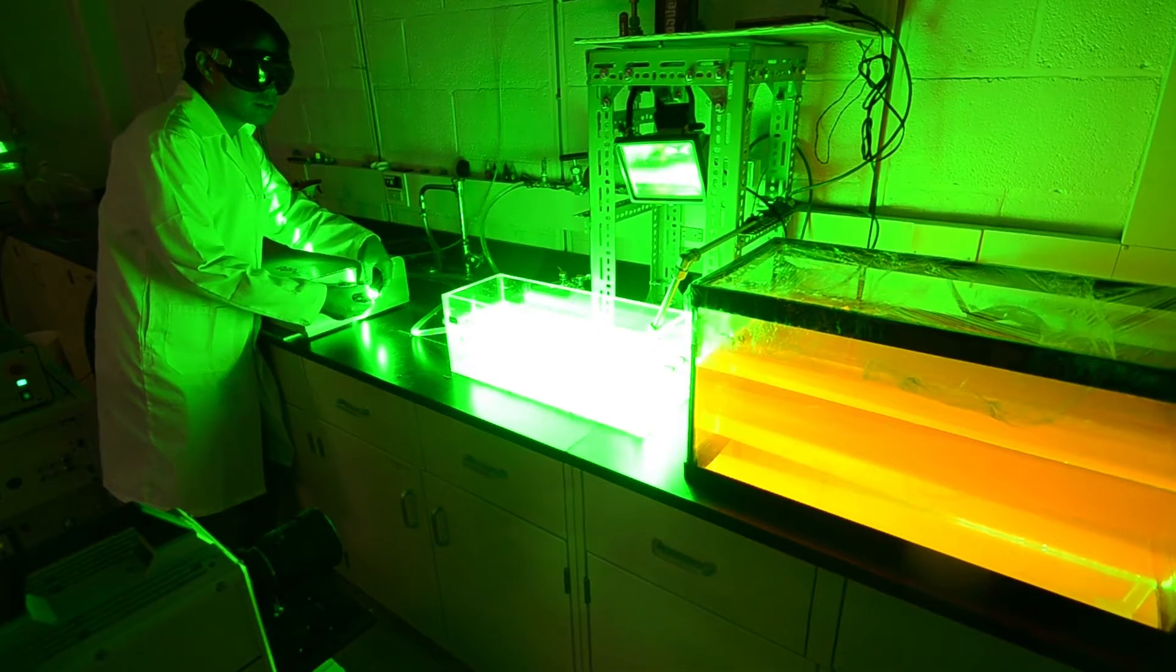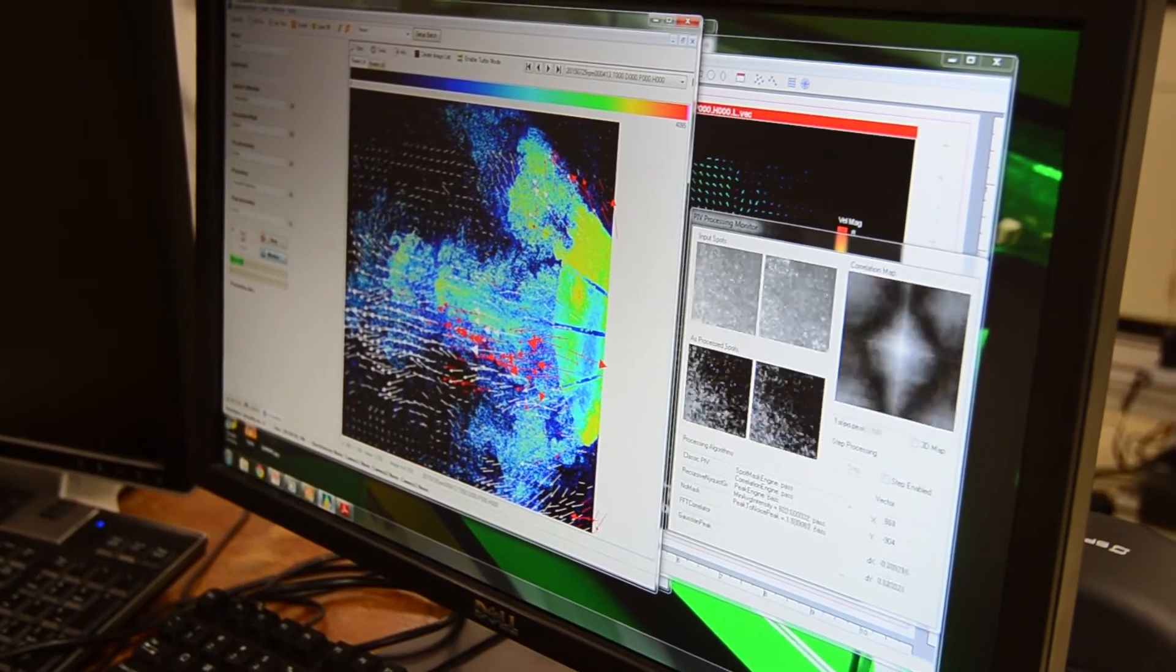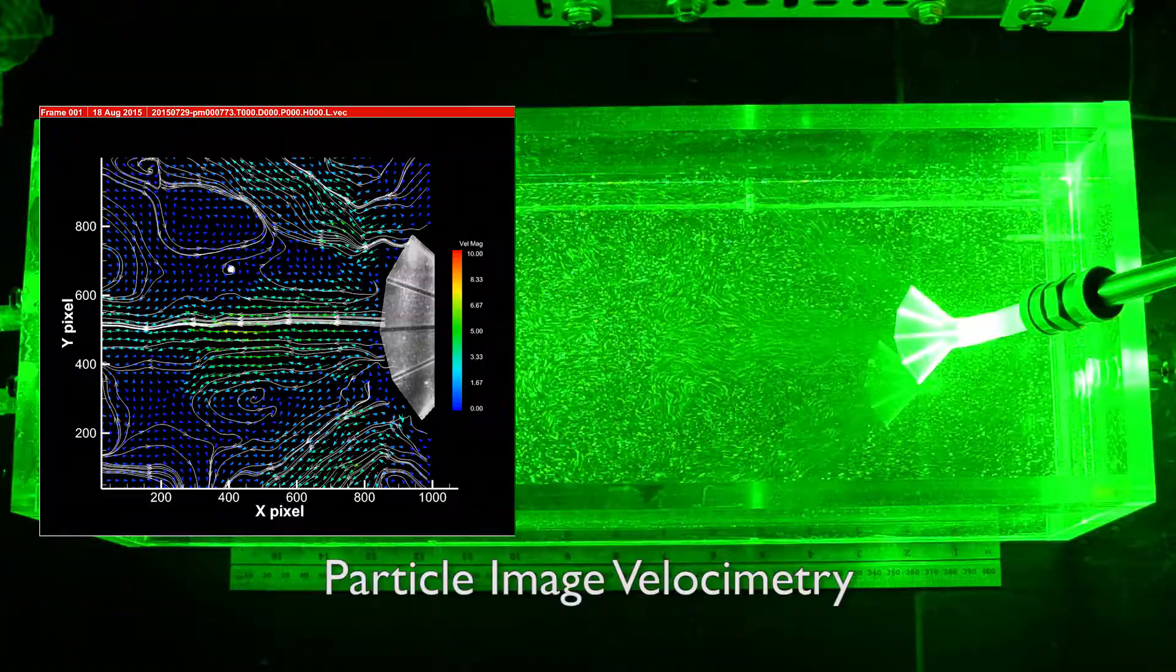By shining a sheet laser at the flow and tracking particle movement using high-speed video, we can map the path of the flow and measure its velocities.